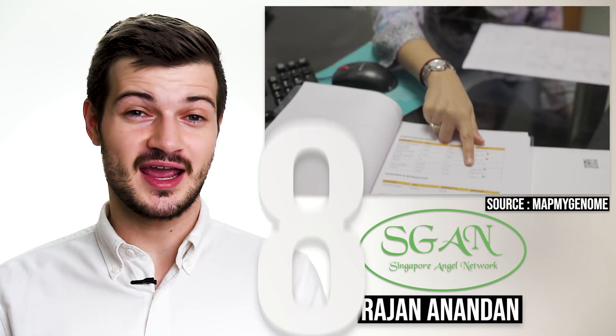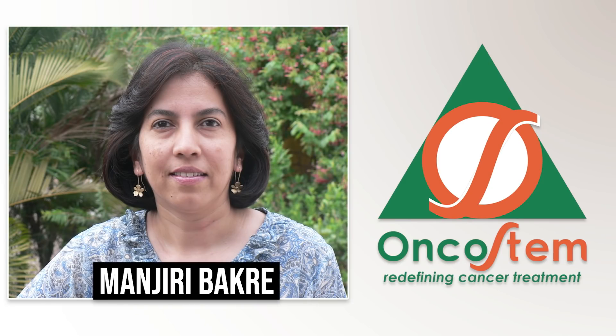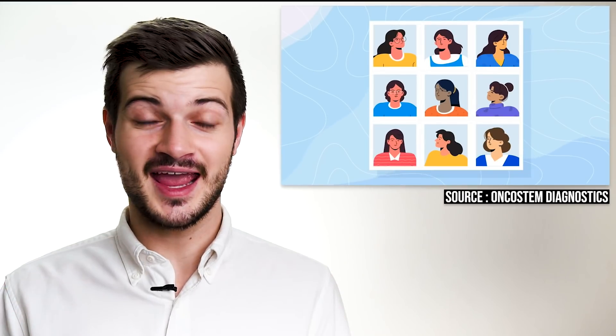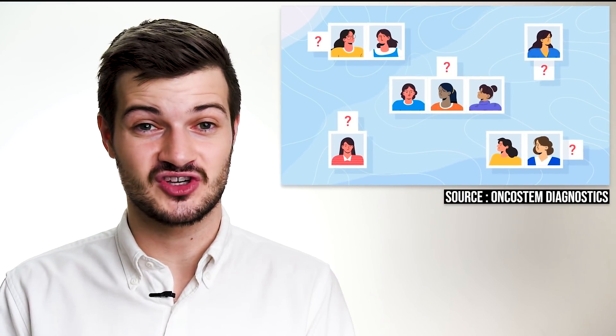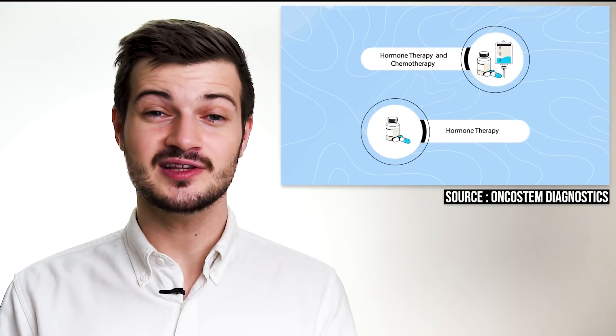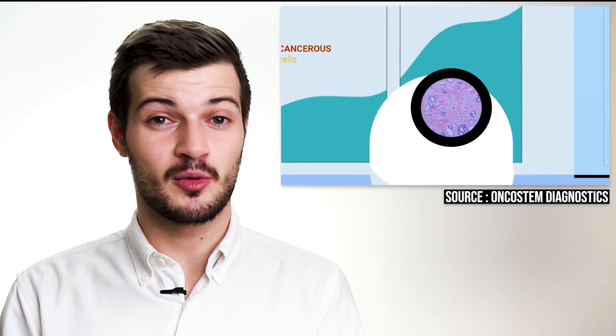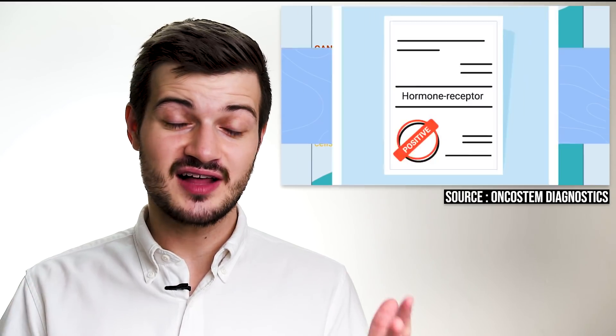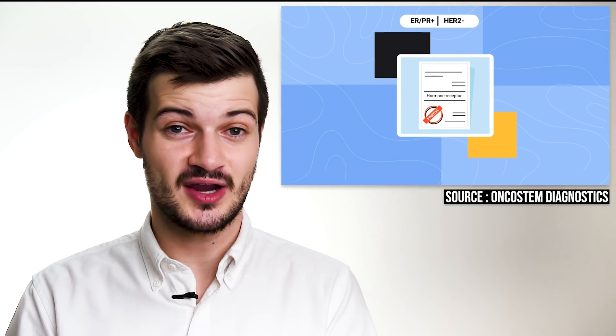Alright, moving on to number 8 now, we have Oncostem Diagnostics. Founded by Manjiri Bakri in 2011, Oncostem is a cancer treatment startup that offers innovative prognostic and preventative solutions. Its flagship product, Can Assist Breast, is a prognostic test for early-stage breast cancer patients. The test provides vital insights about breast tumors and suggests personalized treatment plans that are designed specifically for each patient situation.